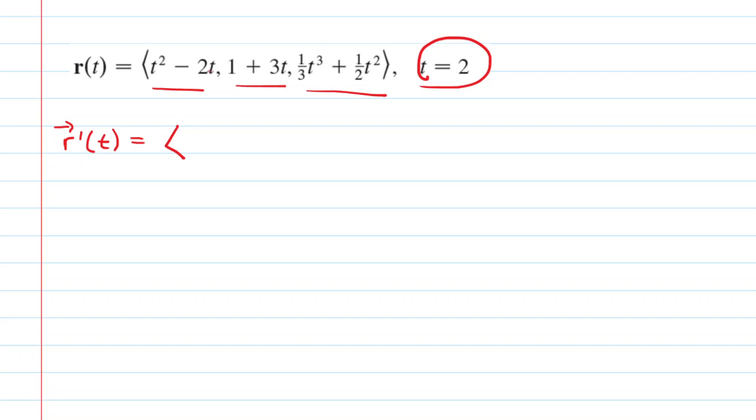So we'll start with the x component. We need the derivative of t² minus 2t. We all know that that is equal to 2t minus 2. And then we move over to the y component. The derivative of 1 plus 3t is just 3. And then we're going to move over to the z component. We'll do the derivative. So we multiply 3 by 1/3 to get t to the power of 2. And then multiply 2 by 1/2 to get t to the power of 1. So that is our tangent vector.